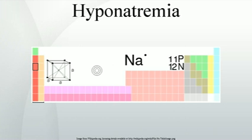Normal serum sodium levels are between approximately 135 and 145 millimoles per liter. Hyponatremia is generally defined as a serum level of less than 135 and is considered severe when the serum level is below 125.